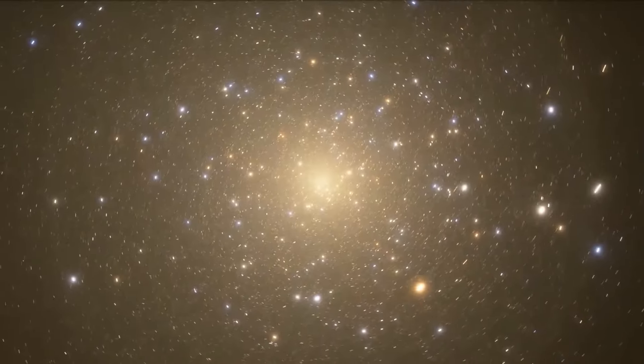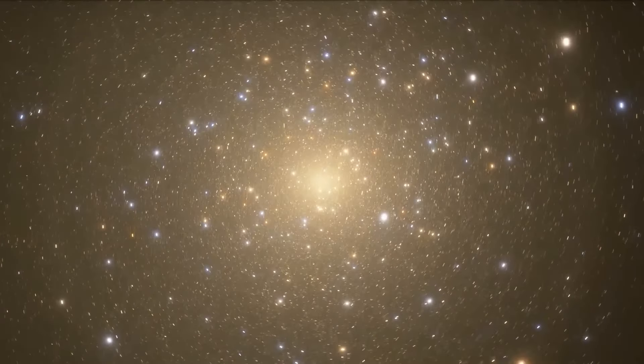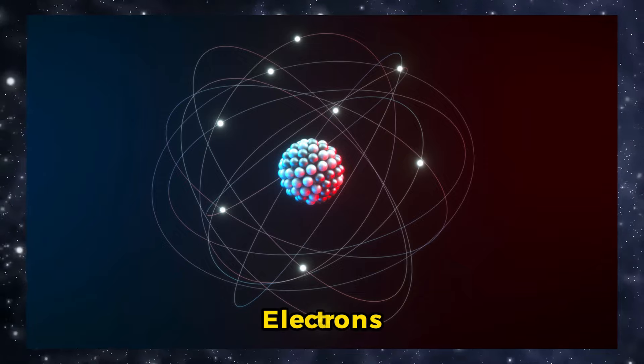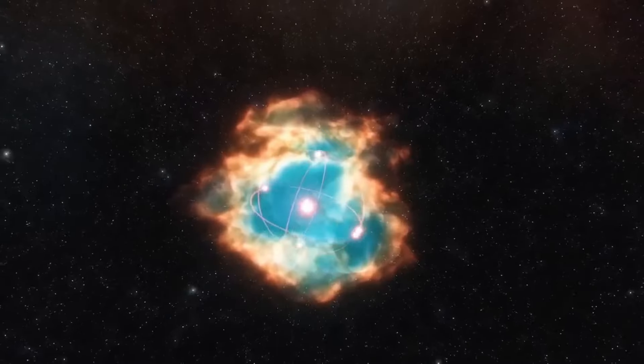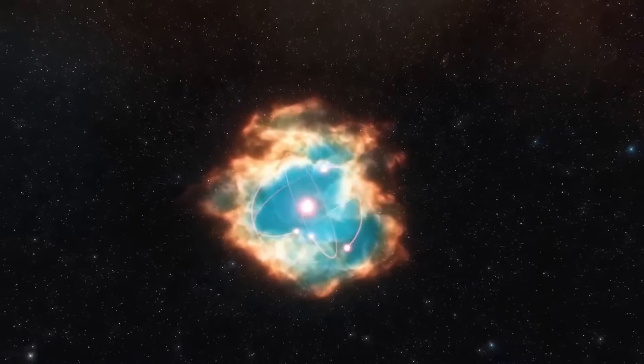At this point in time, the universe had a wide range of basic particles. Neutrons, electrons, and protons were some of these particles. Basically, these were the core parts that were destined to change into the basic building blocks of our world.